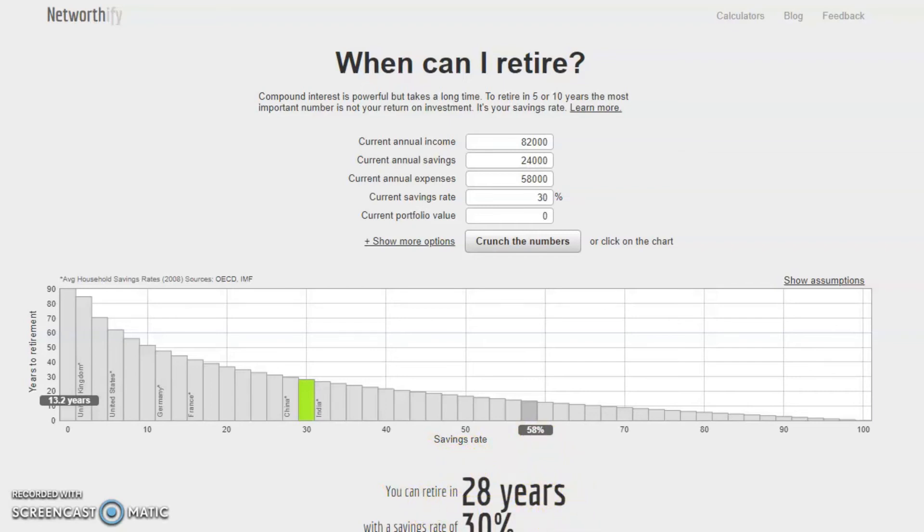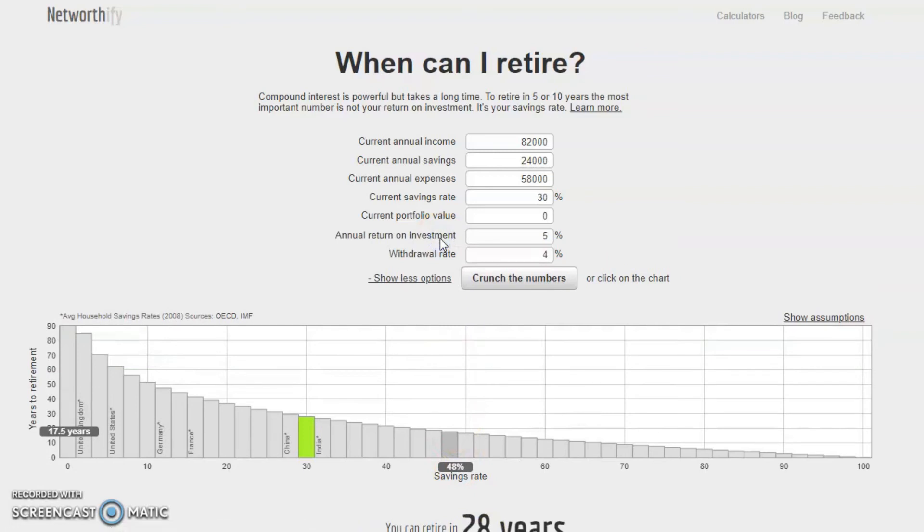However, let's look at some hidden assumptions in the calculator. We may want to alter those. Click on Show More Options to see some of these hidden assumptions. The figure for annual return on investments looks high because that is the return after inflation. Let's make that number more conservative.